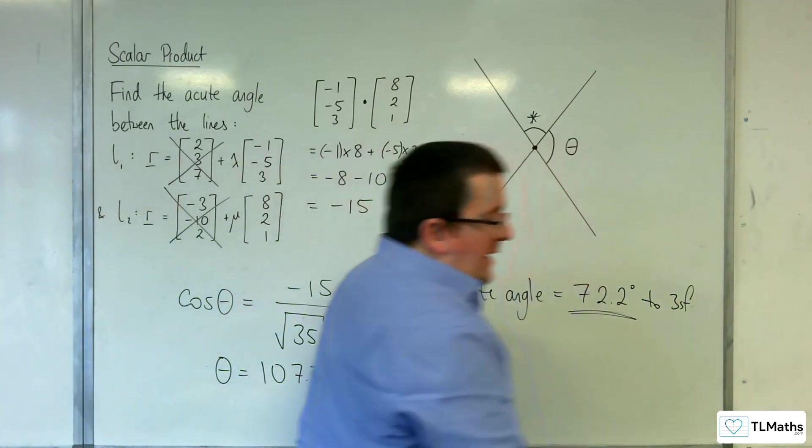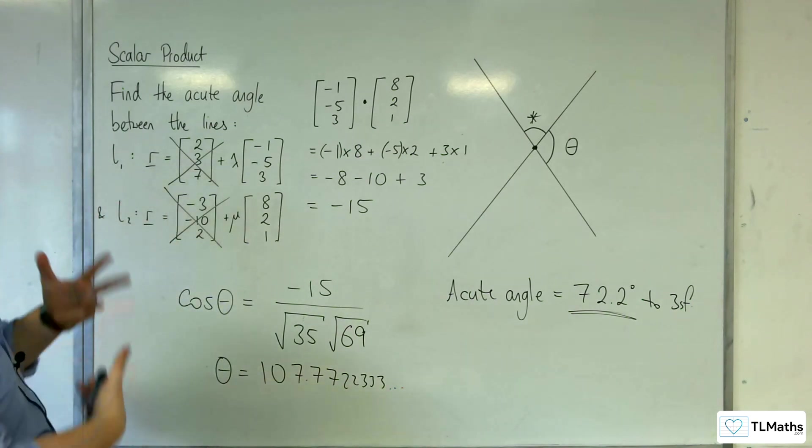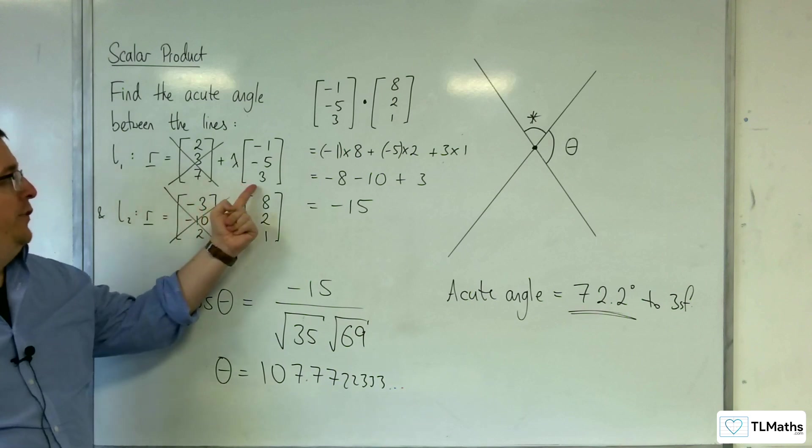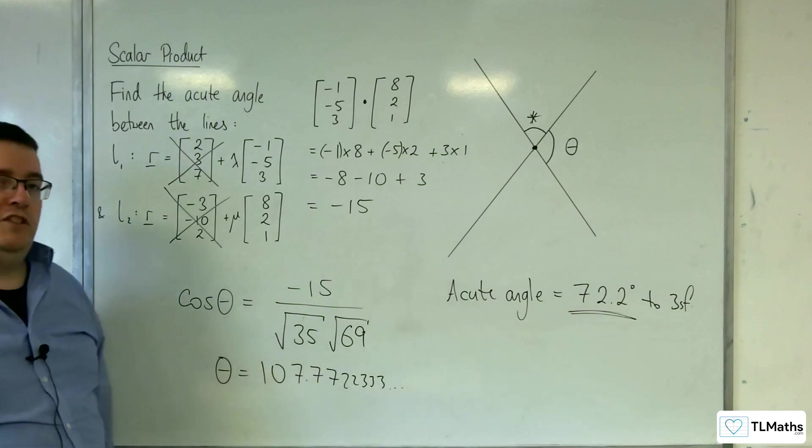So what you need to do, what you need to think about when you're solving this type of problem is ignore the position vectors of the lines. Just use the direction vectors. Find the angle between those. That's the angle between the two lines.